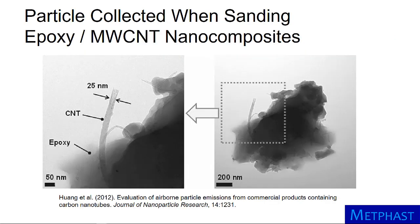With electron microscopy, detailed characterization of particles can also be accomplished. Here is a transmission electron microscope image of a particle collected when sanding epoxy strengthened with multi-walled carbon nanotubes. These images can be used to show that carbon nanotubes protrude from the larger epoxy particles.